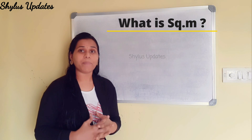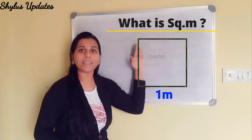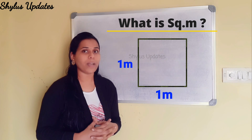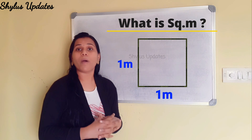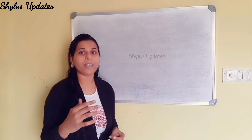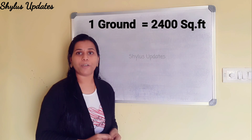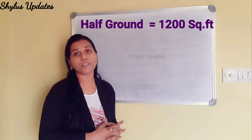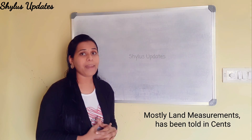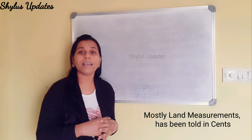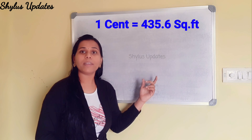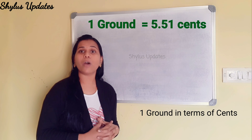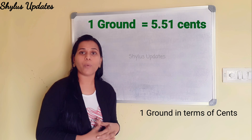Similarly, a square meter has 1 meter length and 1 meter breadth. If we multiply 1 meter into 1 meter, we will get 1 square meter. Another important thing: 1 ground is equal to 2400 square feet. Half ground is equal to 1200 square feet. Mostly, land measurements are told in cents. 1 cent is equal to 435.6 square feet. And 1 ground in cents: 1 ground is equal to 5.51 cents.